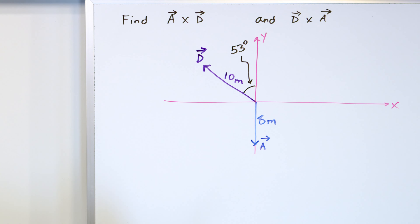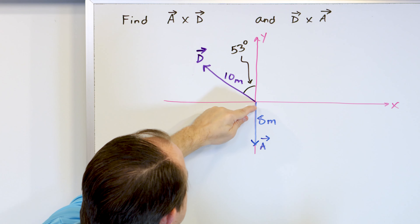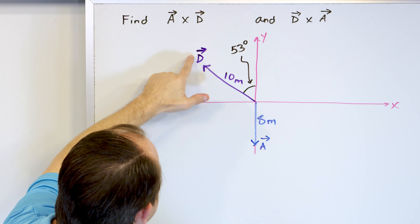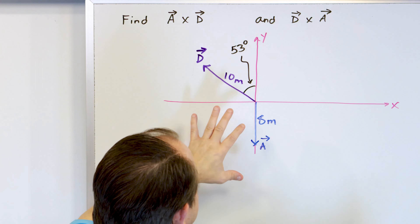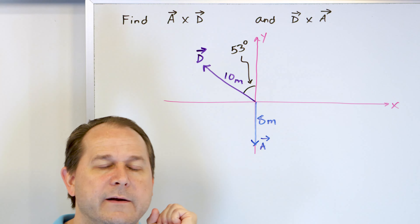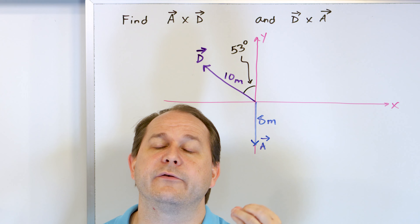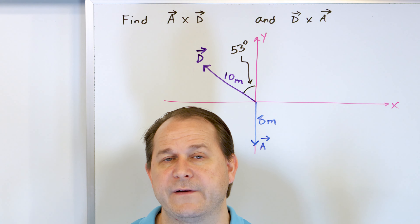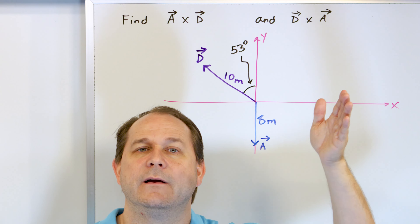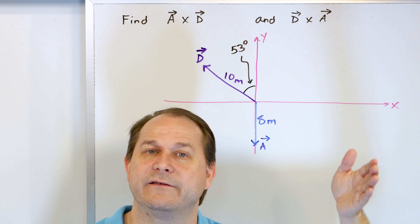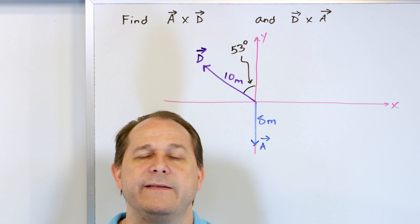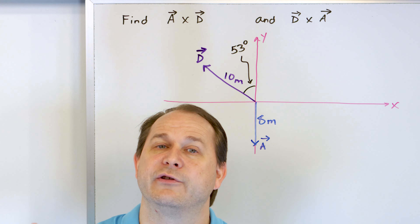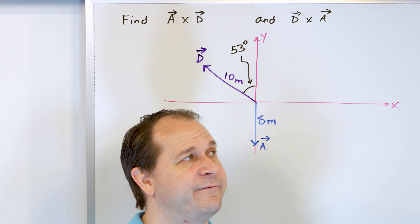We have two vectors on the board. For vector A, the length is eight meters. This could be a displacement vector. The length of the D vector is 10 meters, and we're indirectly given the angles. So we're given the magnitudes and the angles. Because we're given that information, it's easier to find the cross product as magnitude of A times magnitude of D times the sine of the angle theta between them, then use the right-hand rule to figure out the direction, since these are in the XY plane.